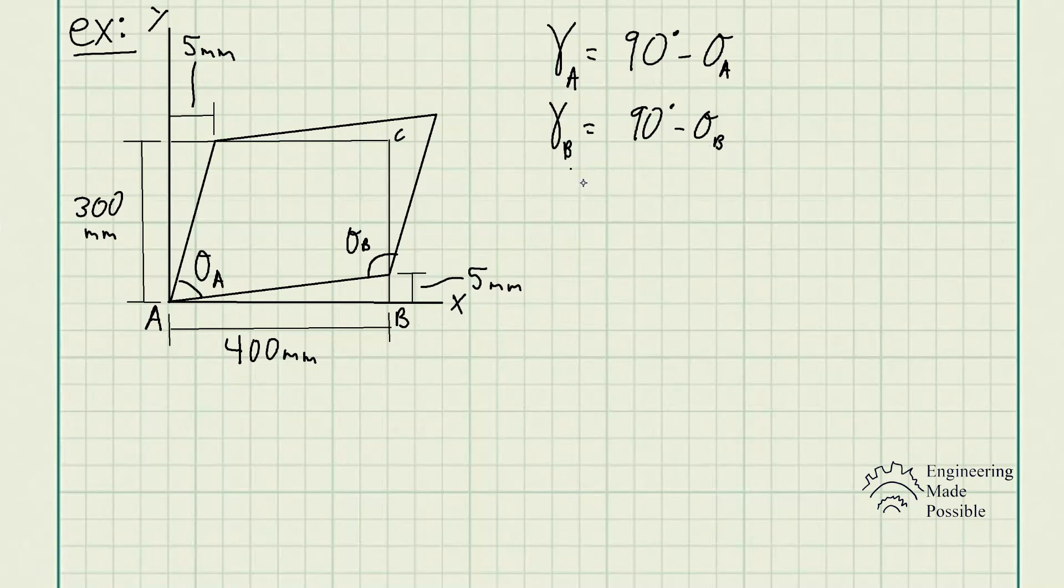So one thing that's important, whenever the change in angle, when the angle of a corner decreases, that's when shear strain is positive. However, when the angle of a specific corner increases, that's when the shear strain is going to be negative.